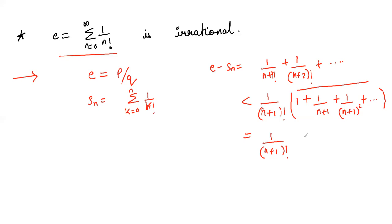So this is same as 1 divided by 1 minus 1 over n plus 1 which becomes 1 over n plus 1 factorial times 1 over n plus 1 minus 1 which is n by n plus 1. So here we get n factorial. So this is 1 over n times n factorial.